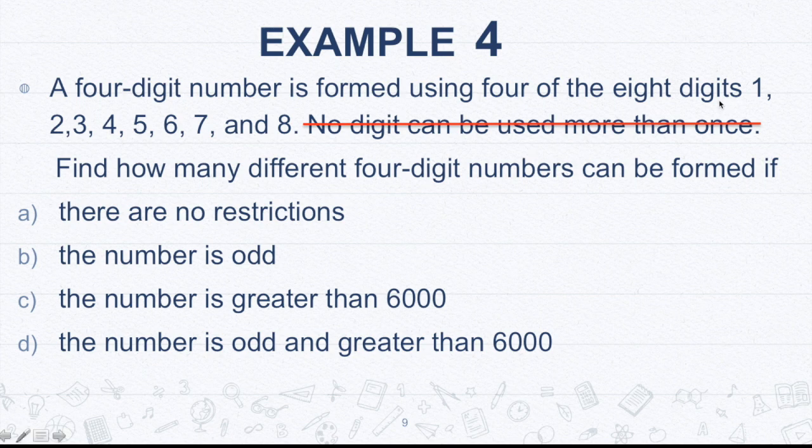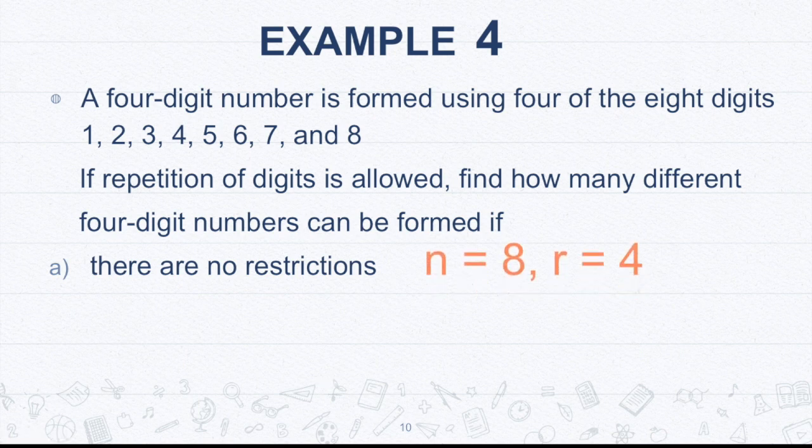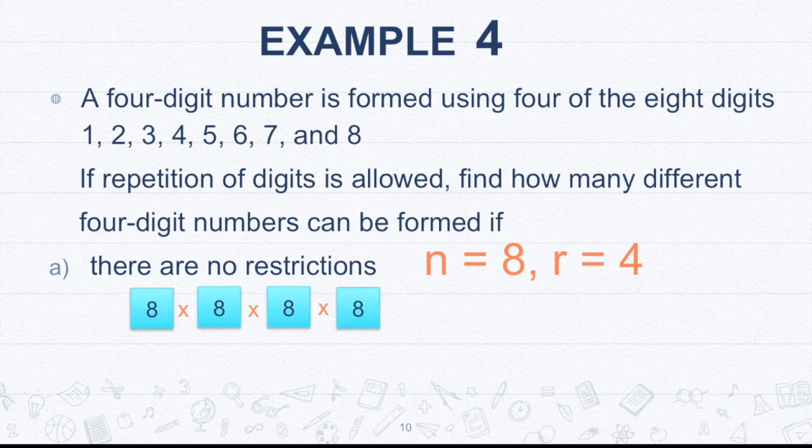Now let's take a look at the choices. Eight digits. So there's no zero at all: one, two, three, four, five, six, seven, and eight. So we don't have to worry about the first digit. Now let's change the question to if repetition of digits is allowed, find how many different four-digit numbers can be formed if there are no restrictions. So again, this is an example of a permutation wherein repetition is allowed. So since there are no restrictions, n is equal to eight, and then r is equal to four. So giving us eight times eight times eight.